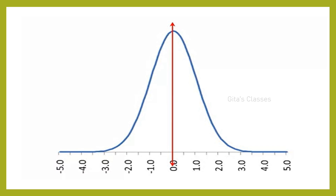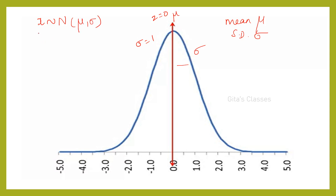We have already seen in the previous classes the normal distribution. It is a symmetric continuous distribution with two parameters: mu and sigma, that is mean and standard deviation. This is the general normal distribution. We have also seen the standard normal distribution, which has mean equal to 0 and standard deviation sigma equal to 1. These notations are important.